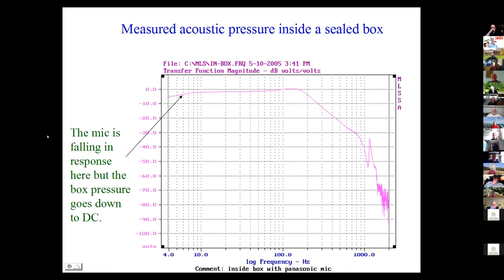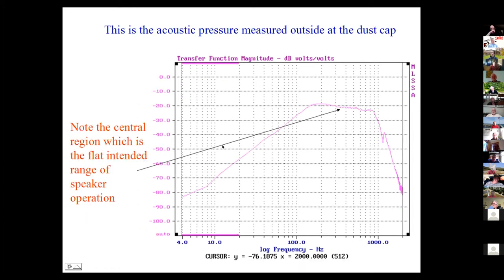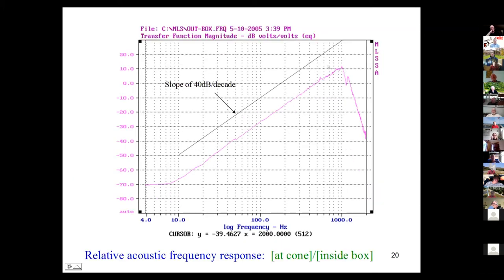I thought I'd put this in, even though it's not really necessary. This is the same measure of the pressure inside this little box. Here is the pressure at the dust cap just outside the box. When I take the ratio of those two pressures, that line is like frequency squared over two decades. It's amazing how nicely it shows that the acceleration of the cone produces the output. That's the way loudspeakers work.